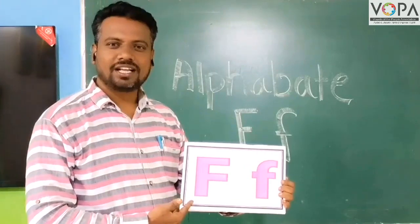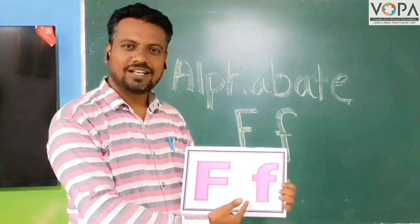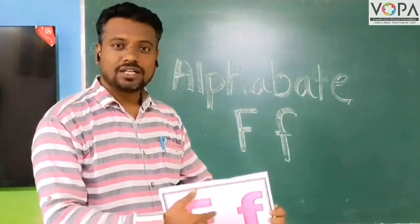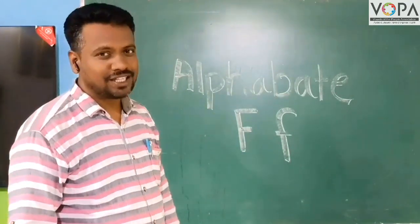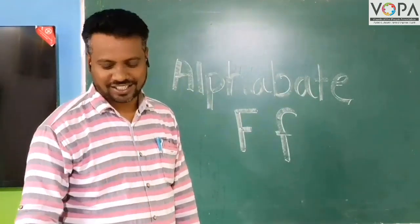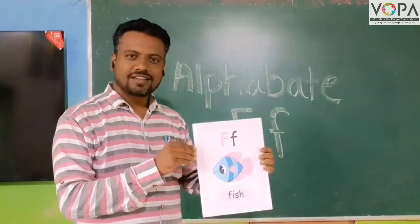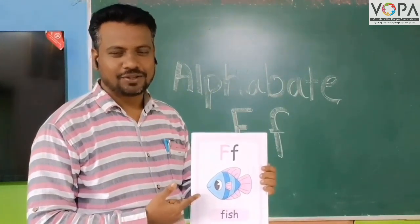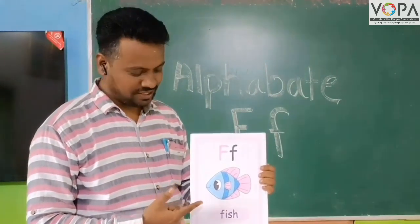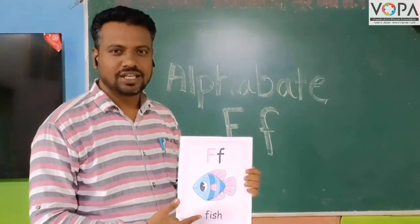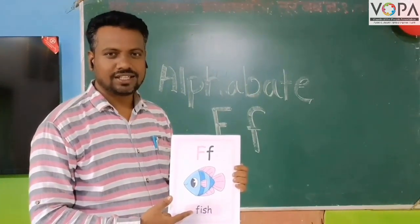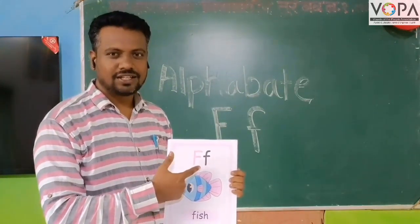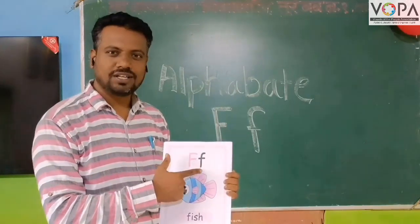This is capital F and this is small F. Look at here — very good! This is a fish. Fish words start with the letter F — capital F and small F.